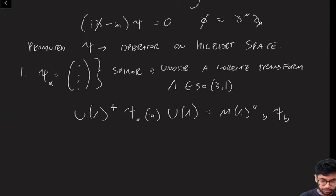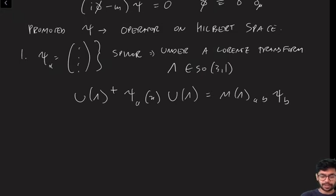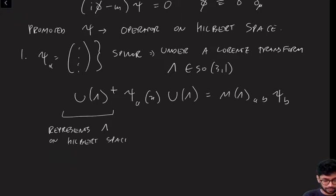Okay, and I should probably raise the index here. Oh sorry, excuse me. This is correct, and I should lower the index here. Okay, so what's going on here? So this is telling you is that here I have a matrix U of lambda, not a matrix, sorry, an operator U of lambda. This operator acts on the quantum field theory Hilbert space, and it represents the Lorentz transformation on that Hilbert space.